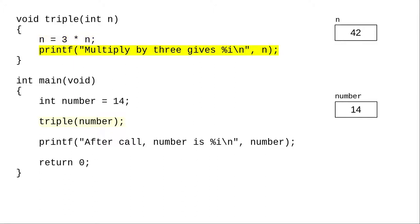The printf statement prints the value of n, which is now 42. When the triple function ends, the parameter, and any variables you might have declared in the function body, go away.